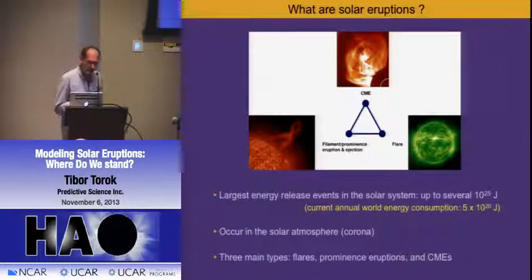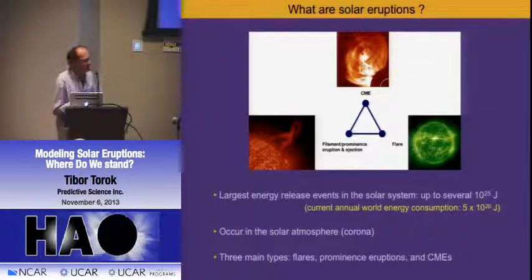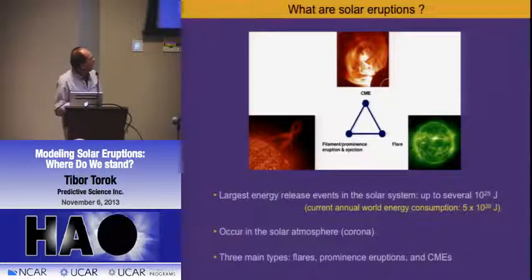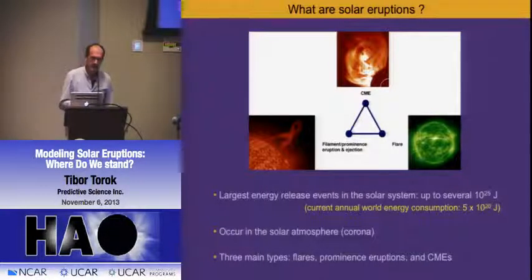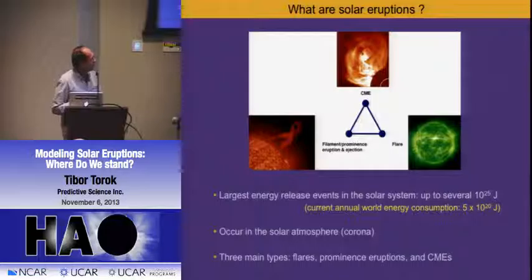Fortunately, we cannot get to it. They occur in the atmosphere of the sun, more precisely in the corona. Observationally, there are three main types: erupting prominences, CMEs, and flares.